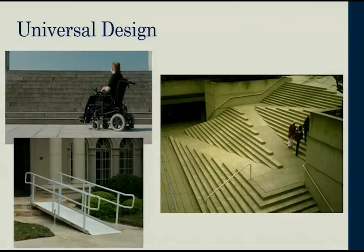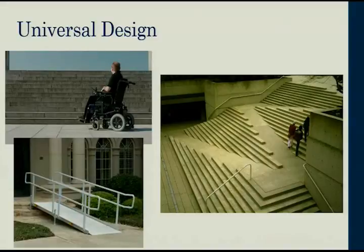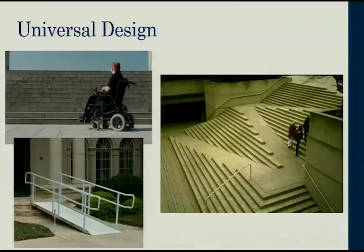The principles of universal design include: flexible in use; simple and intuitive use — you approach it and know exactly what to do even if you've never seen it before; perceptible information, so that any signage can be accessed and read by everybody; tolerance for error — if you're not in a wheelchair and go up the ramp, that's fine, you can use it any way you want; low physical effort; and size and space for everybody to approach and use it. Those are the principles of universal design.